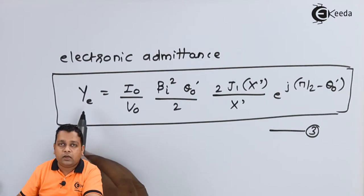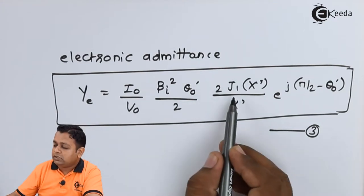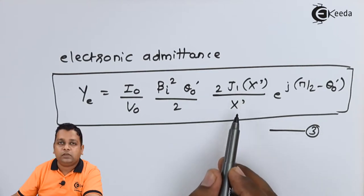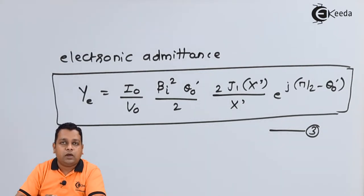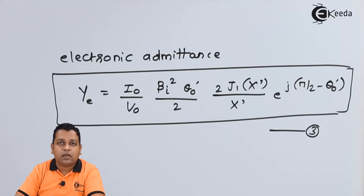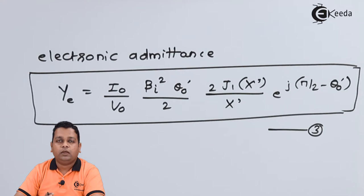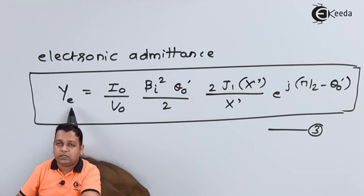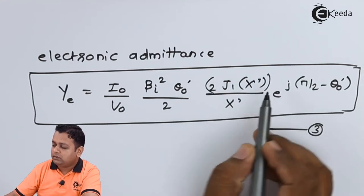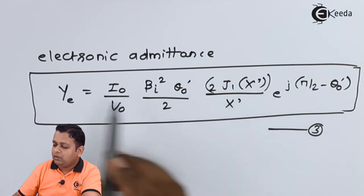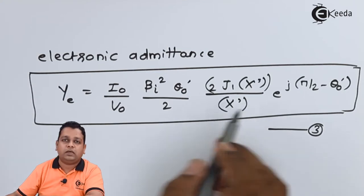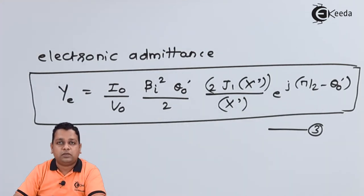From the relation of the electronic admittance Ye with respect to J1(X') — the Bessel function — and X' — the bunching parameter — we can see that the electronic admittance has a non-linear nature. Ye is directly proportional to the numerator and inversely proportional to X', which is itself directly proportional to the signal voltage.